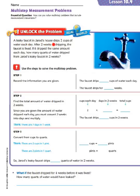A leaky faucet in Jared's house drips two cups of water each day. After two weeks of dripping, the faucet is fixed. If it dripped the same amount each day, how many quarts of water dripped from Jared's leaky faucet in two weeks? Let's look at the question that we have to answer. It's asking for quarts, whereas when it first discussed it, it said two cups. So we know that we're going to have to do some form of conversion.